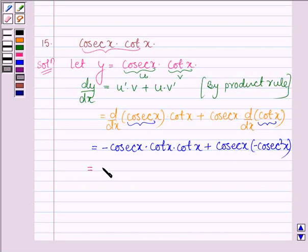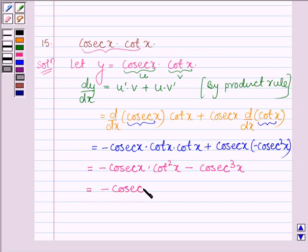This is further equal to minus cosec X cot square X minus cosec cube X, which can be rewritten as minus cosec cube X minus cosec X cot square X.